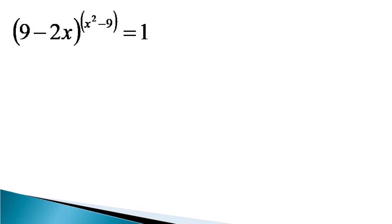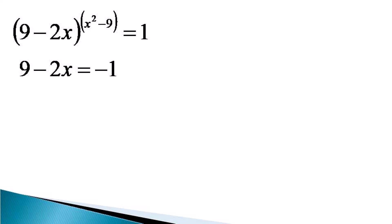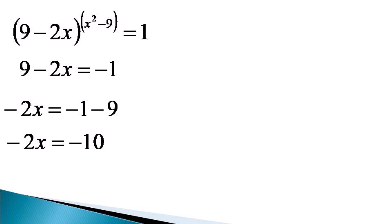There is another solution for this equation which is mostly missed. An exponential expression can equal unity when the base equals minus 1 and the exponent is an even integer. Using this condition, 9 minus 2x equals minus 1, giving minus 2x equals minus 10, which makes x equal to 5.